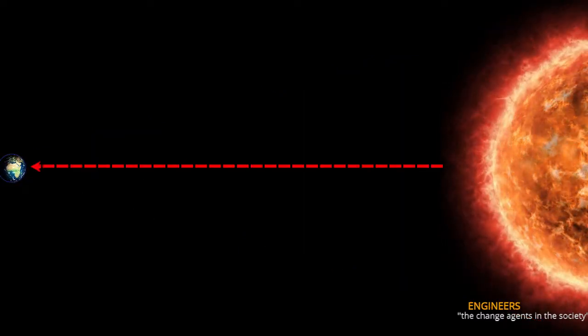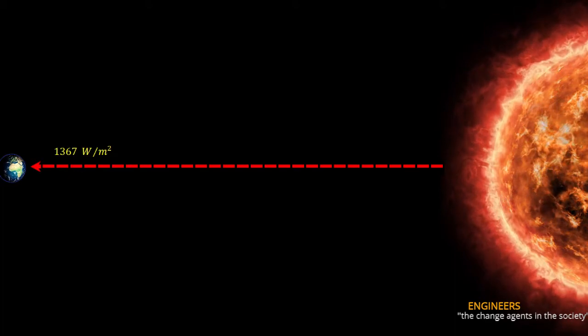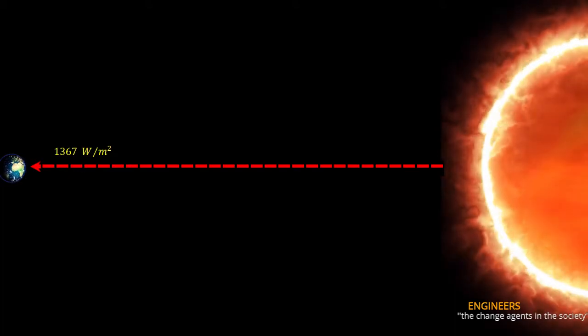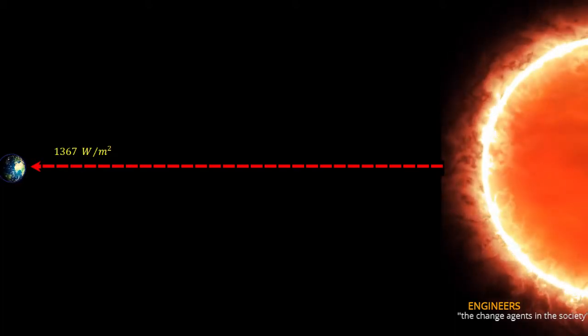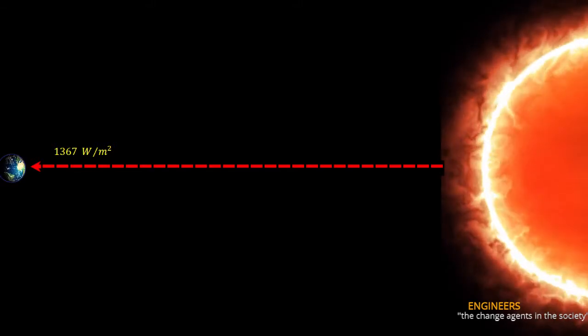The amount of energy received at the earth's surface is approximately 1367 watts per meter square, which is known as the solar constant.